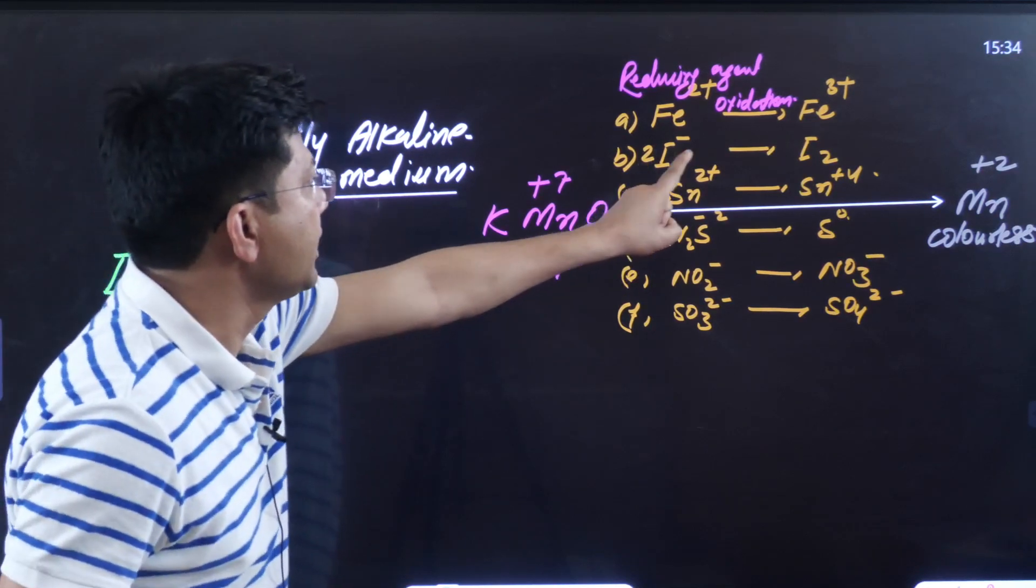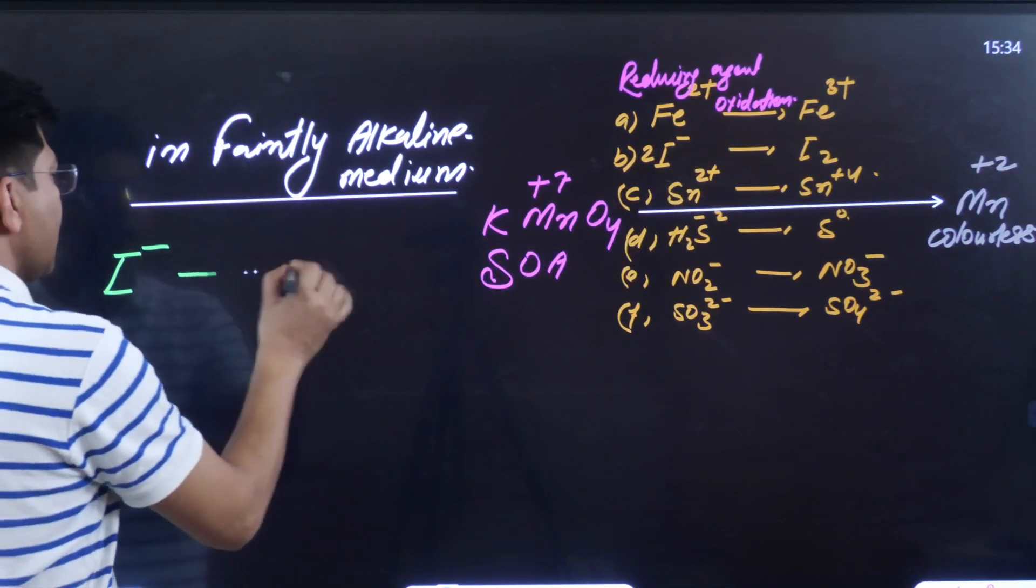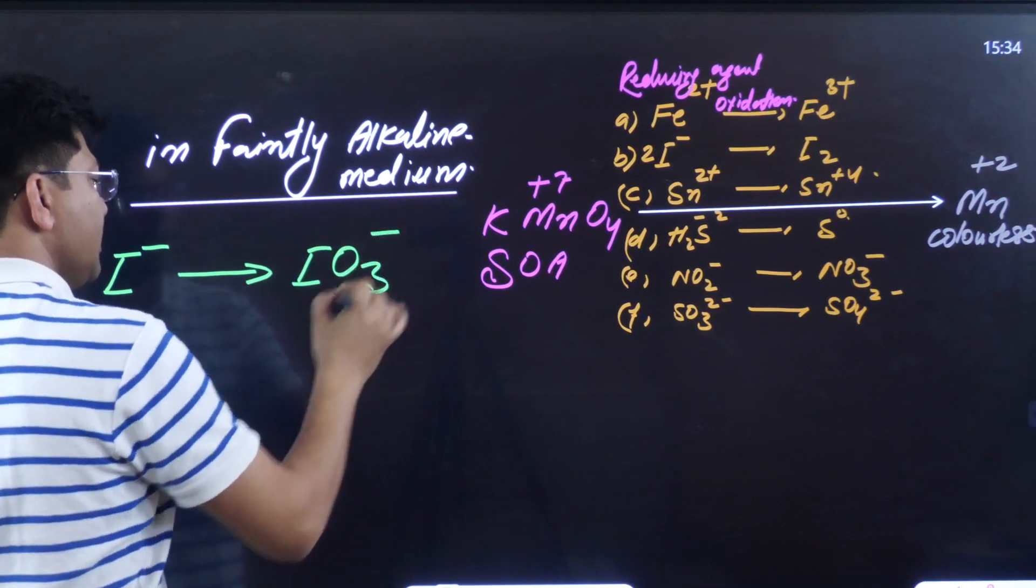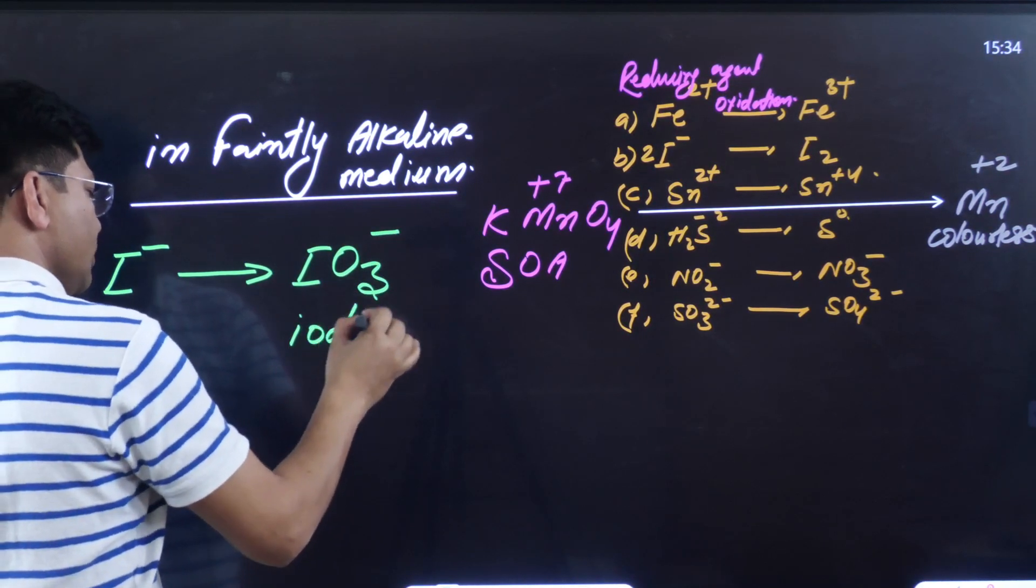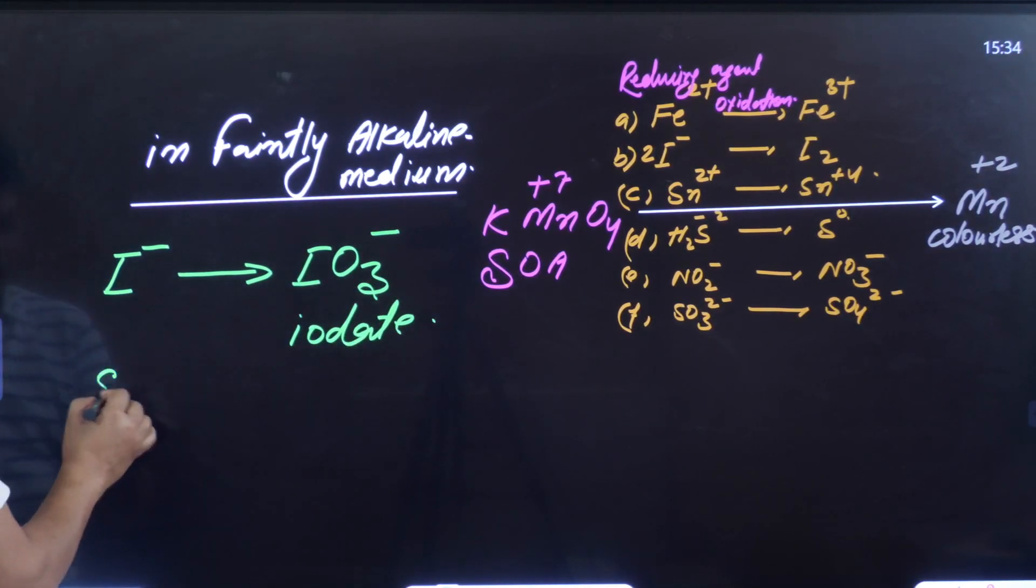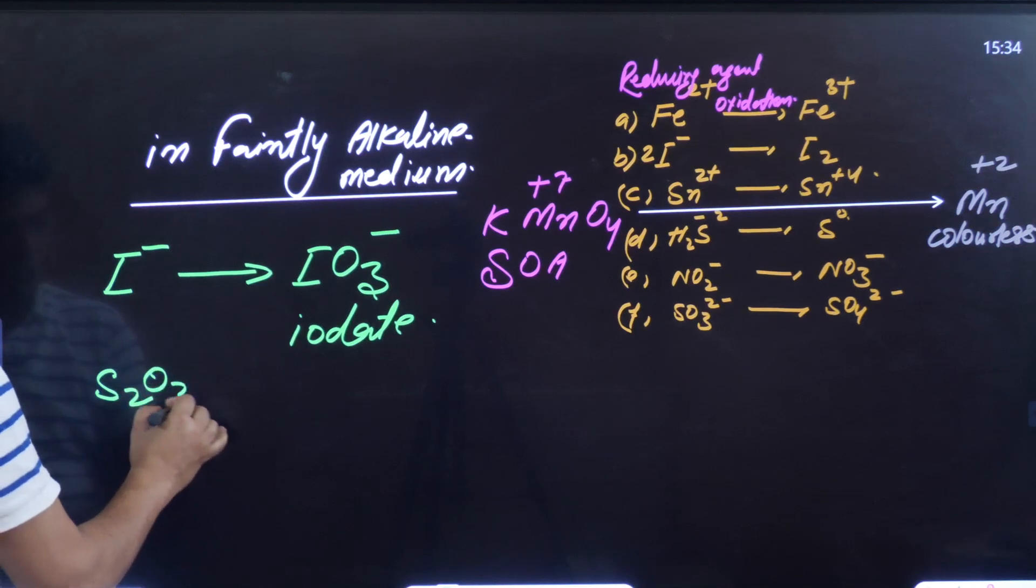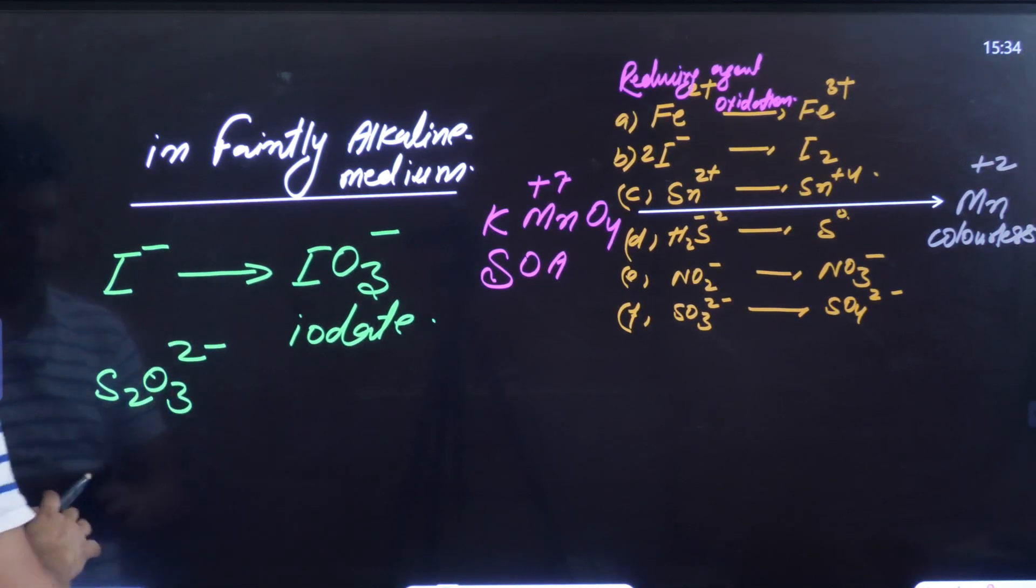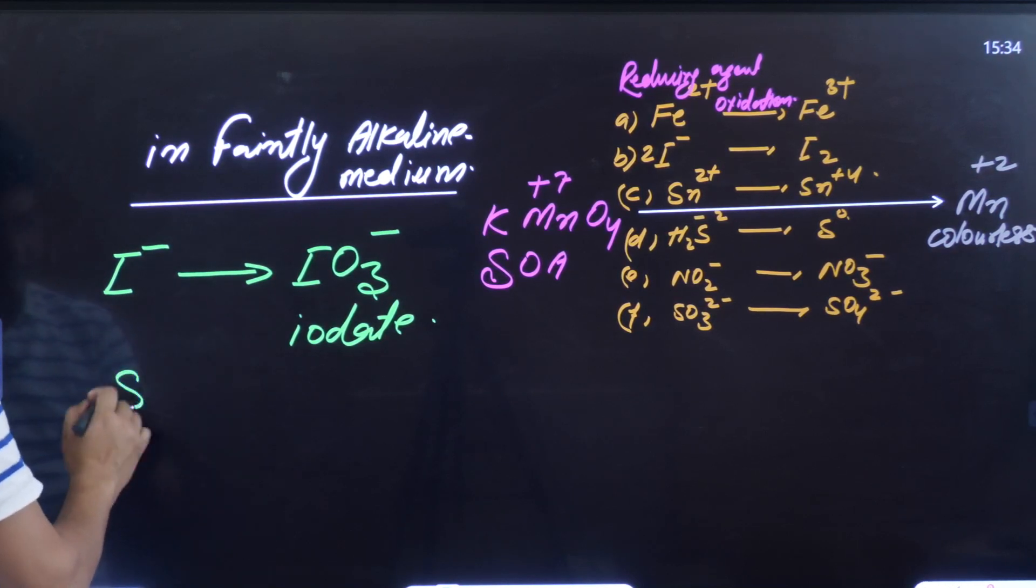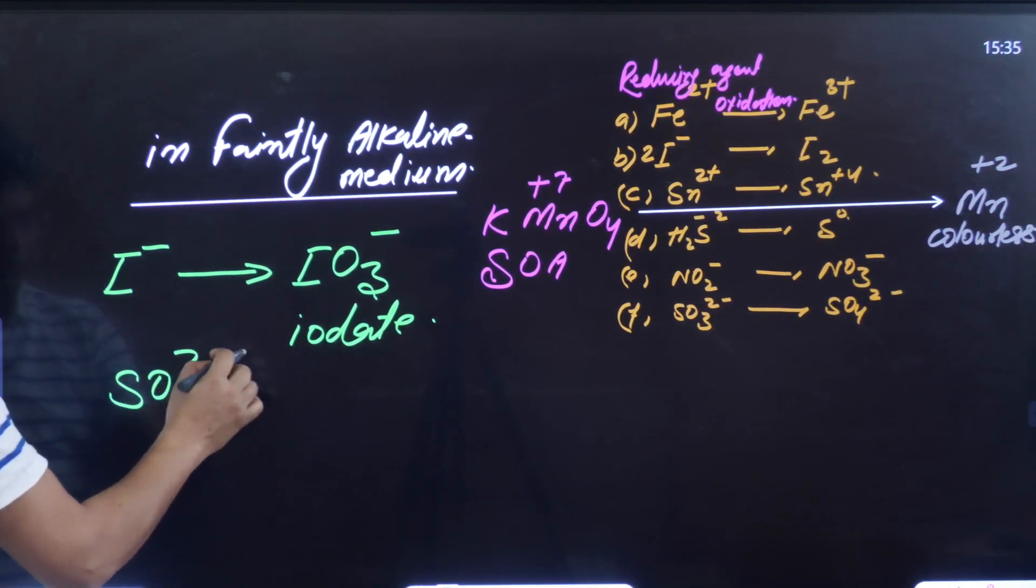Let us suppose if this is I₂ in faintly alkaline medium, it becomes iodate IO₃⁻.